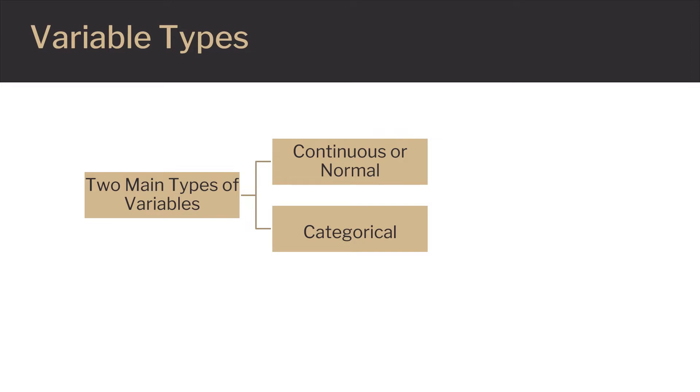Categorical variables are those that have discrete categories or levels. Categorical data can be further described as nominal, ordinal, interval, or ratio.